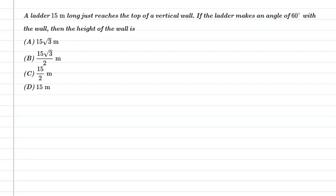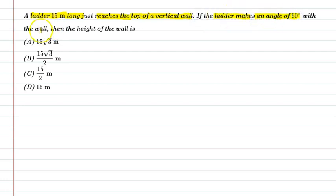Hello friends. First of all, let us understand the question. The question is: a ladder 15 metres long just reaches the top of a vertical wall. If the ladder makes an angle of 60 degrees with the wall, then the height of the wall is?